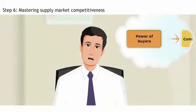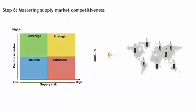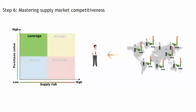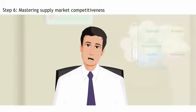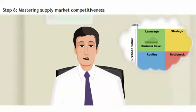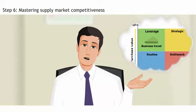What about the power of buyers? Buyers in a position of power can get more value by using leverage to force down price. In regards to business travel, Lava is in a position of power. In the portfolio matrix, we positioned the travel category in the leverage quadrant.